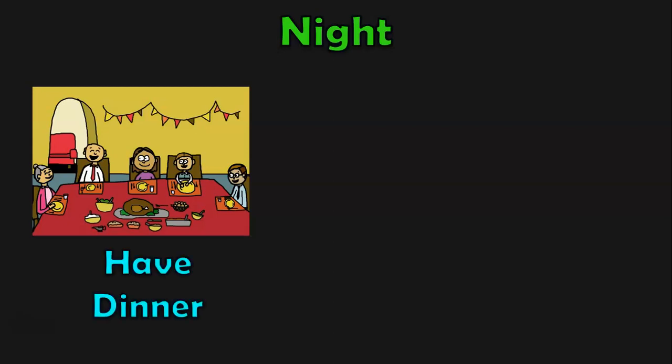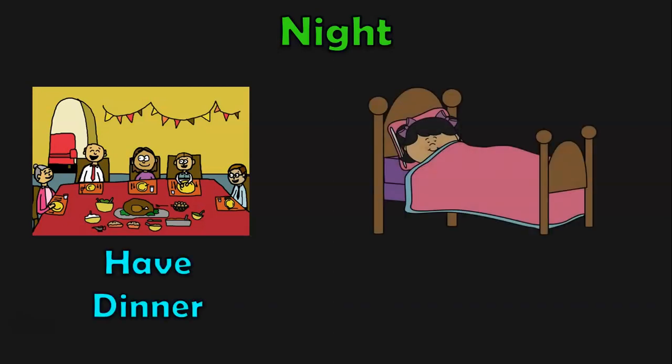We saw the routine activities during the evening. Now we are going to see what all we do during the night. Once the night sets in, we have dinner, and after dinner, we go to sleep. So this completes the entire routine of activities which is done during a day.